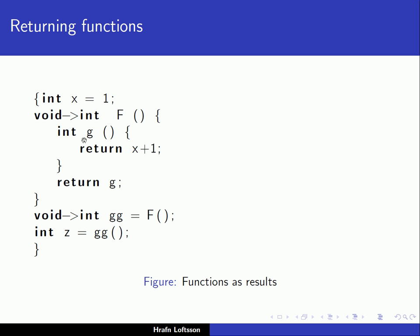Inside f, we have a definition of a function g which returns an integer. That function g doesn't take anything as a parameter and returns x plus 1. Here, x is a non-local reference, so it must be the one in the enclosing block — up here. What does function f do? It just returns the function g. So f returns another function. The type of g is void to int — it doesn't take anything as input but returns an integer. The function f therefore returns a function that takes void as input and returns an integer.